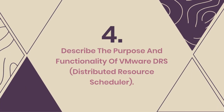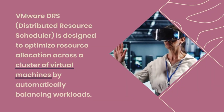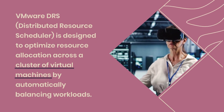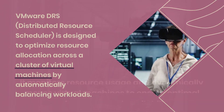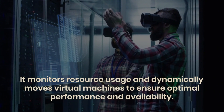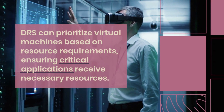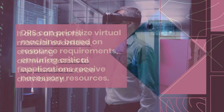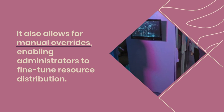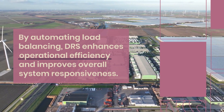Question 4: Describe the purpose and functionality of VMware DRS (Distributed Resource Scheduler). VMware DRS is designed to optimize resource allocation across a cluster of virtual machines by automatically balancing workloads. It monitors resource usage and dynamically moves virtual machines to ensure optimal performance and availability. DRS can prioritize virtual machines based on resource requirements, ensuring critical applications receive necessary resources. It also allows for manual overrides, enabling administrators to fine-tune resource distribution. By automating load balancing, DRS enhances operational efficiency and improves overall system responsiveness.